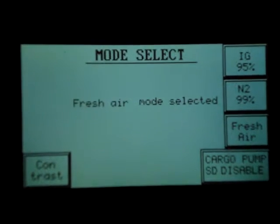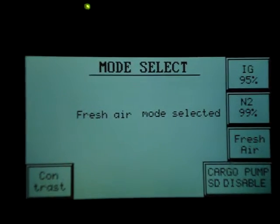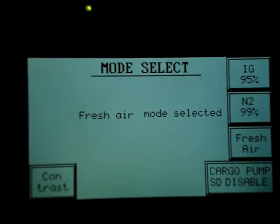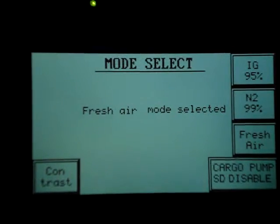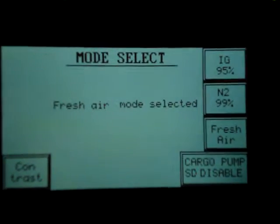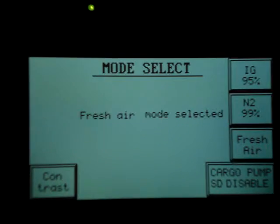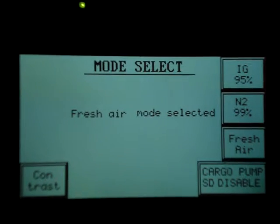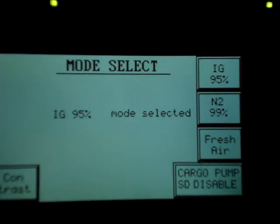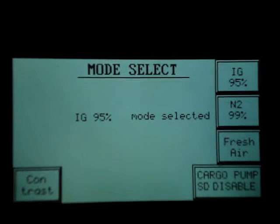So right now, I have shown you how to select the three different modes. Now, I want to show you the IG because chief officer wants IG now, 95%. So I press IG, 95% mode, so it has come.